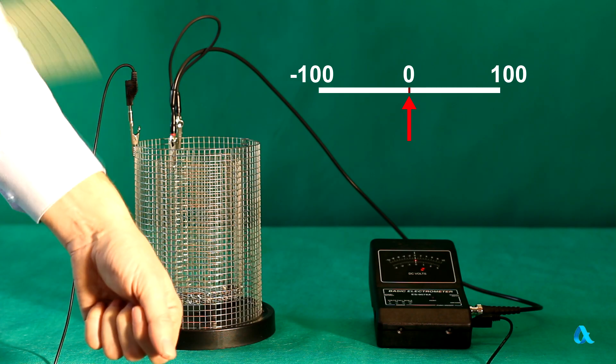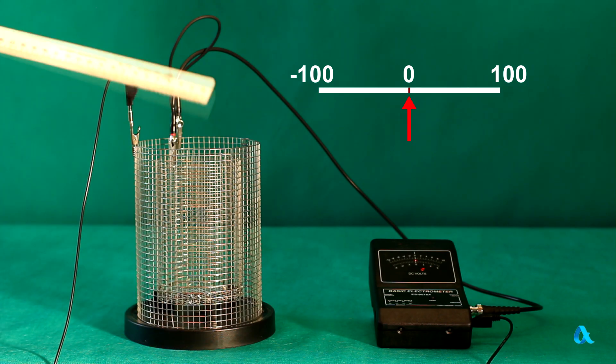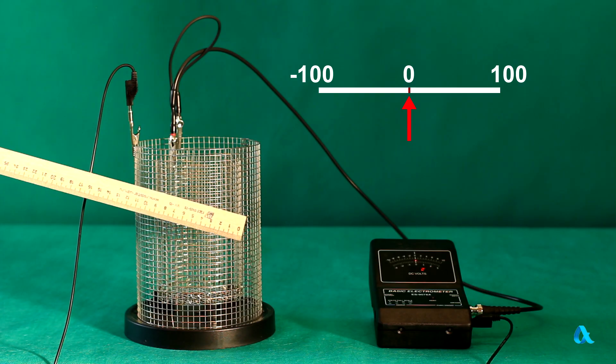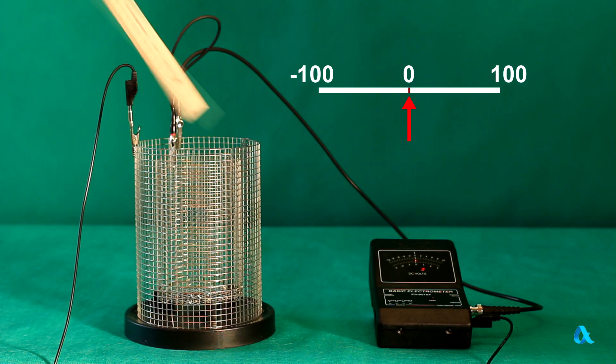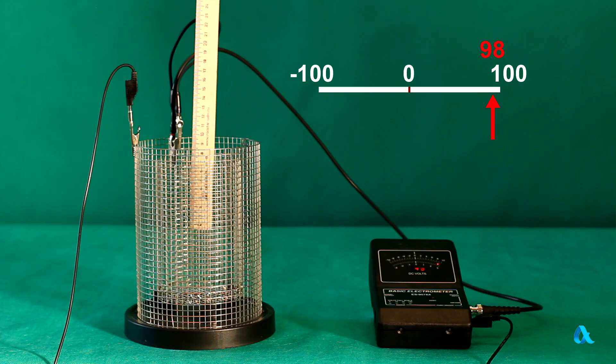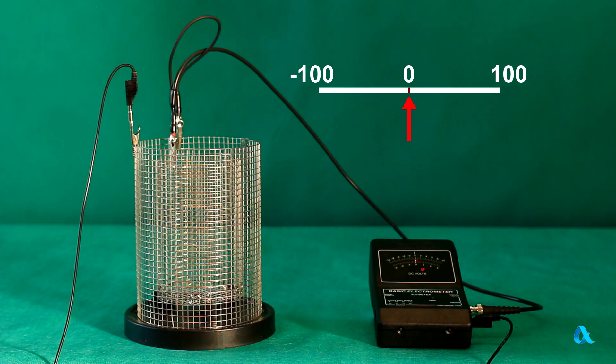We rub a wooden ruler on a tissue and hold it up to the outer mesh. The electrometer readings have not changed. Now we put the ruler into the cage. The electrometer registers the presence of a positive charge. When we remove the ruler the readings go zero again.